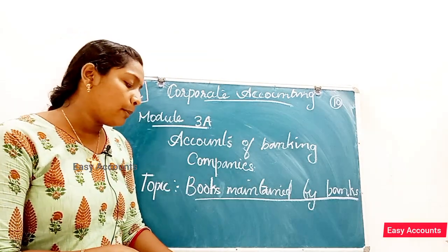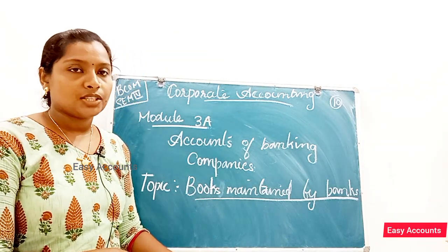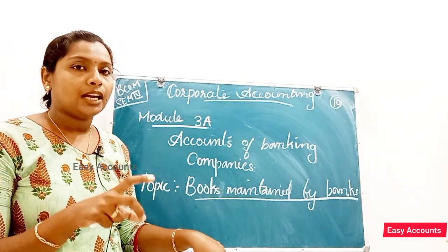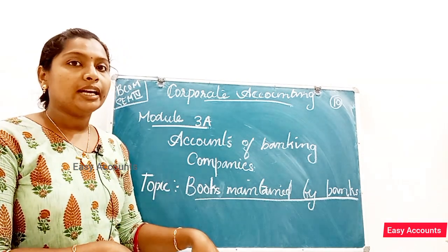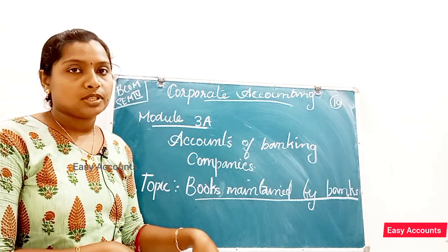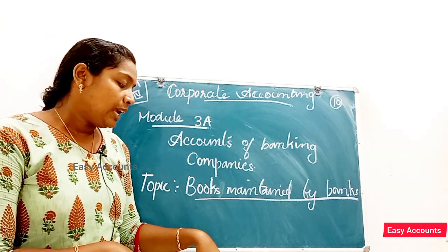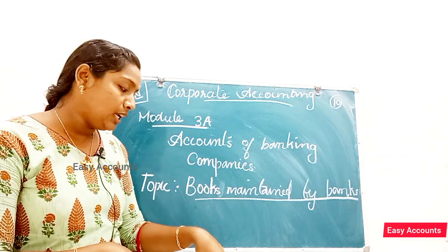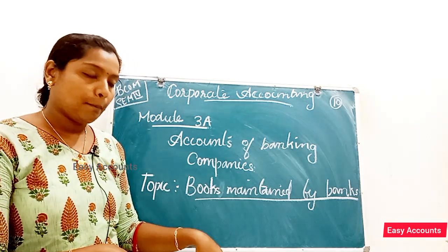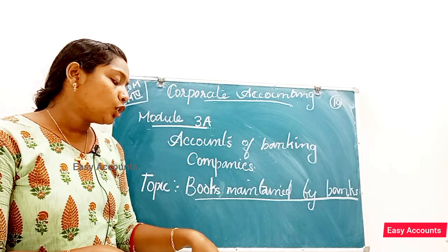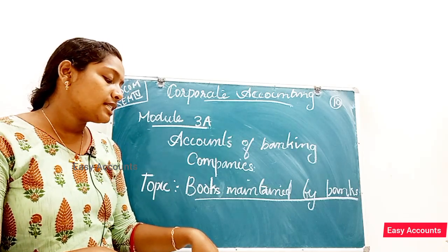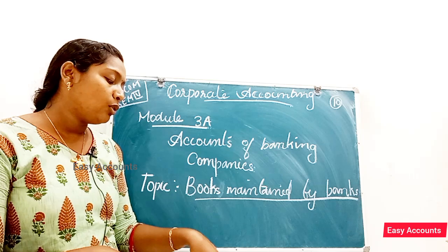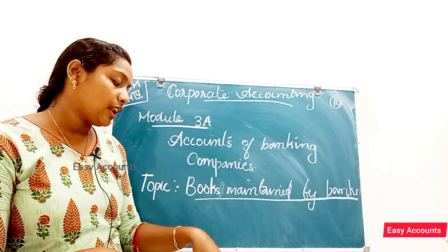This is the Fixed Deposit Ledger. It contains the transactions of those customers who have deposited their money into the bank for a fixed period. Generally, at the top of the account, the depositor's name and address, rate of interest, period of deposit, and the amount of deposit are to be recorded.